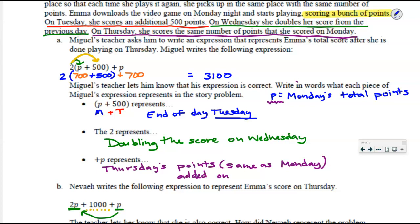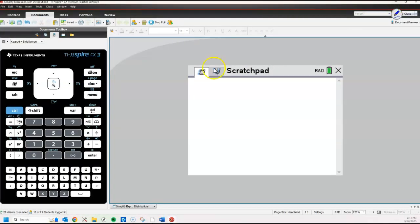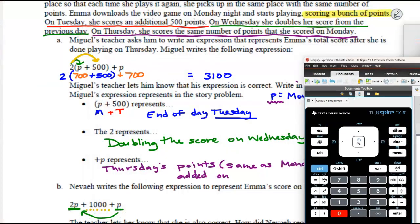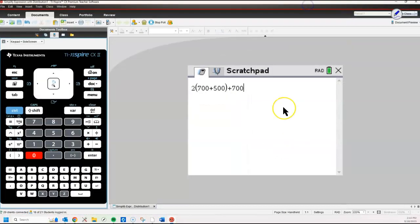Eyes on my screen. We're going to do this in our calculators as well. We have 2(p+500)+p. But I already told you I know what that p is. Instead of p, what am I going to change those to? 700. I'm going to get rid of that p, include a 700. I'm going to get rid of this p and change it to 700. Is the 2 supposed to be a 3? Did she triple her points or did she double her points? She doubled them. Here's the fun thing about these calculators. They understand the order of operations. Calculator agrees that it's 3100.